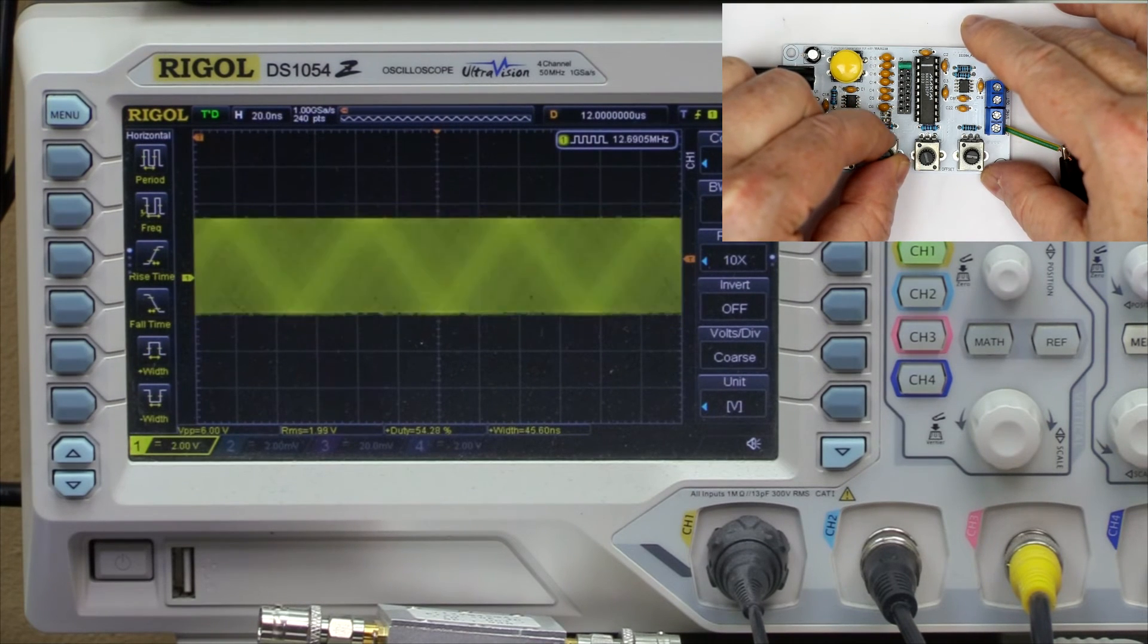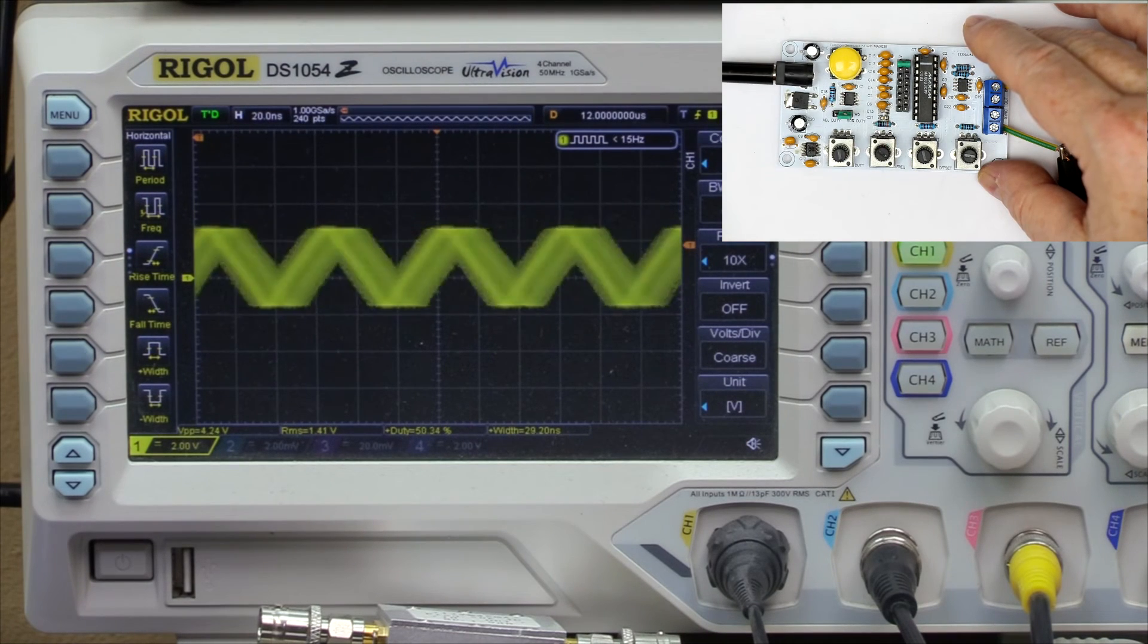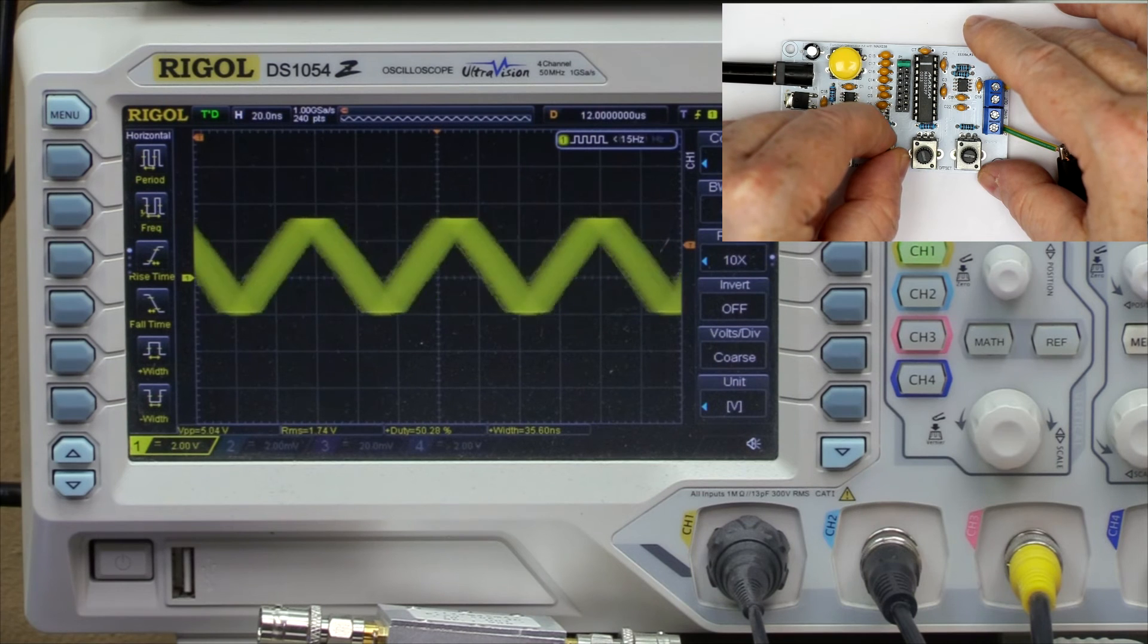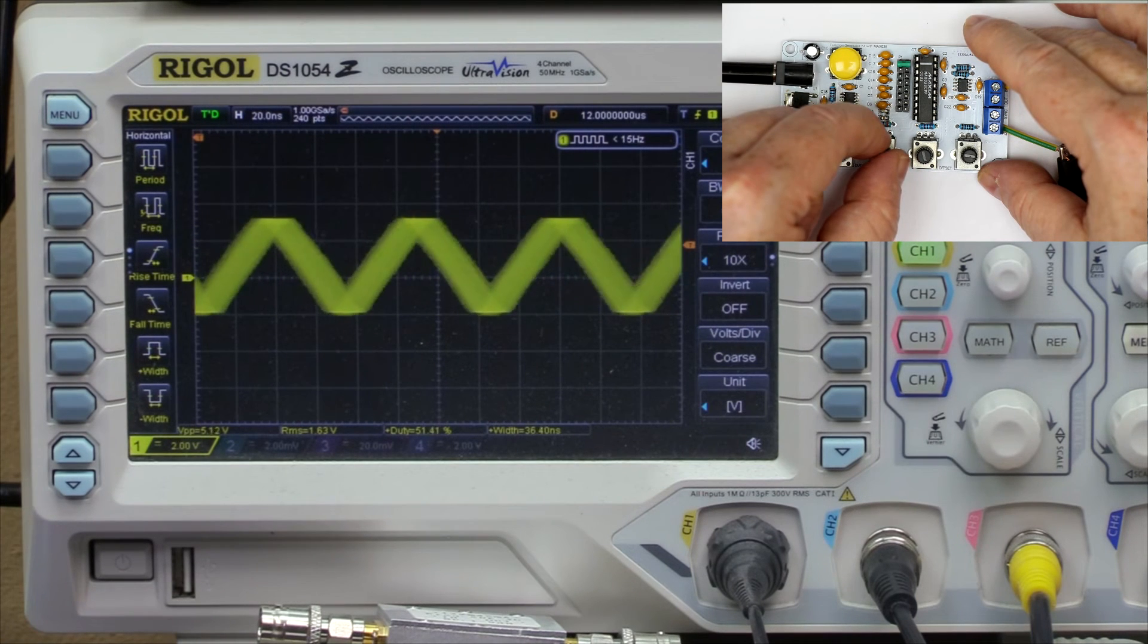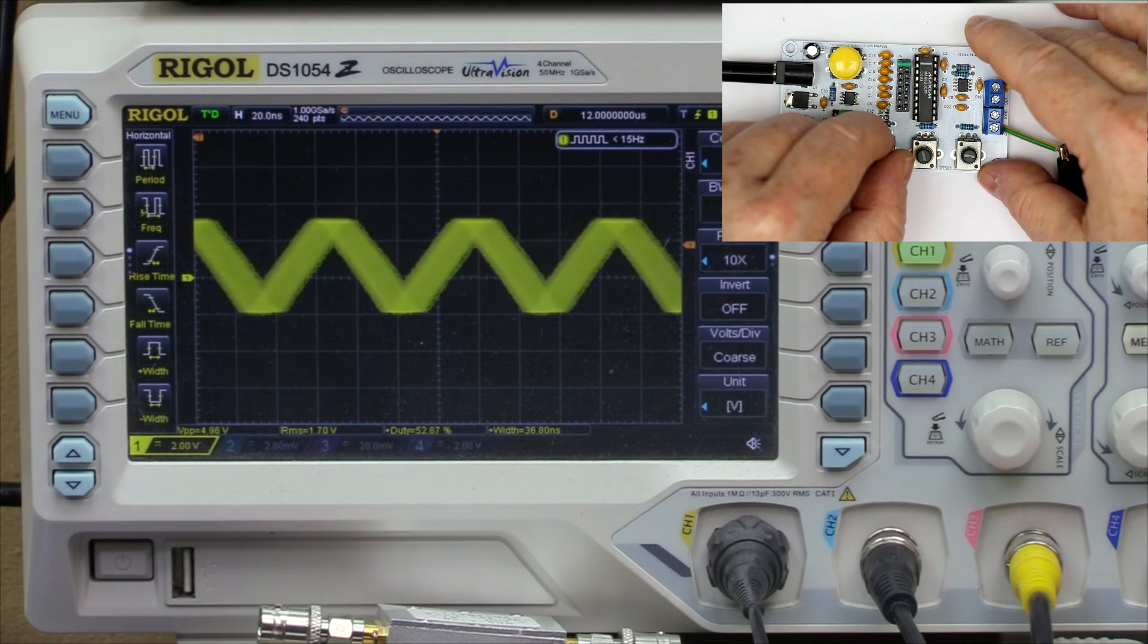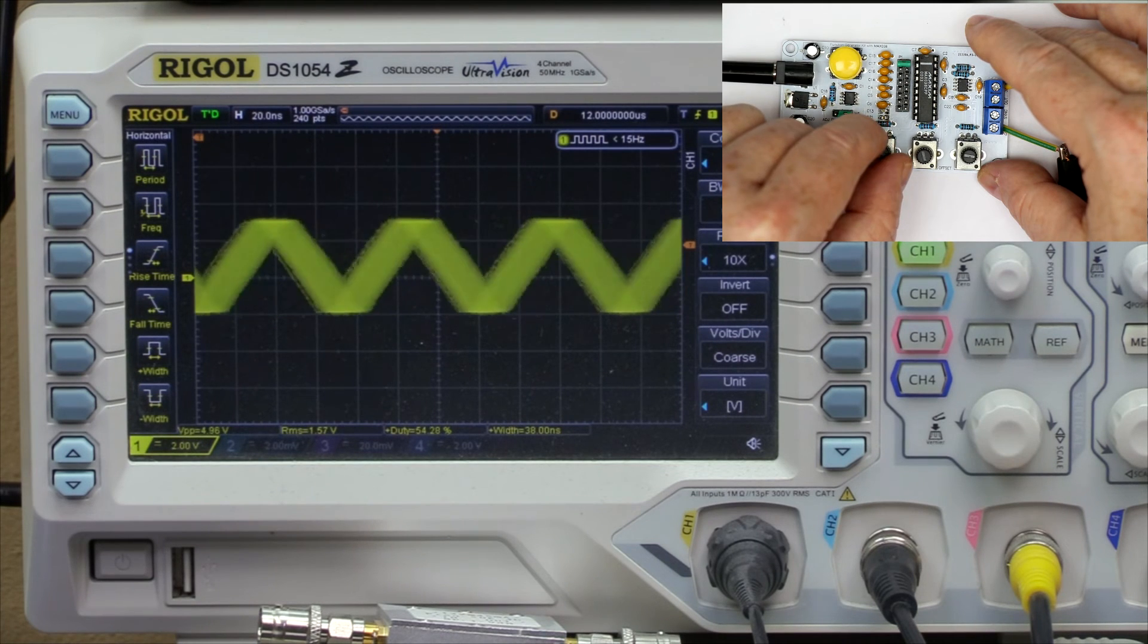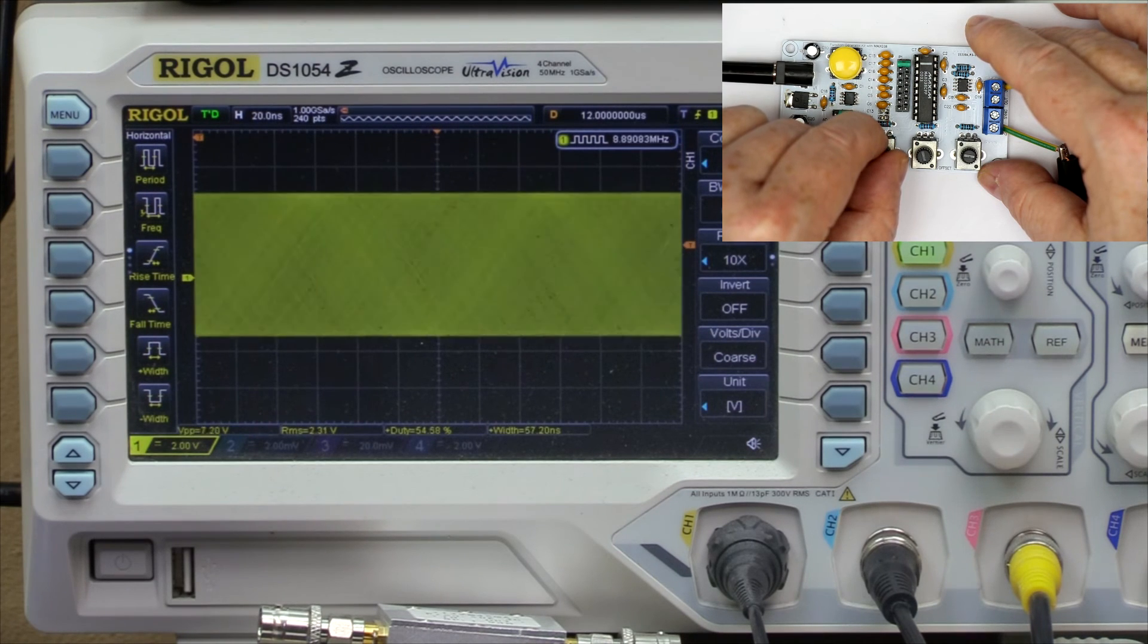And if we still go up to the maximum, the internal frequency counter doesn't work anymore because the signal is simply too bad, but this is the end of the range. We are at 20 nanoseconds per division, and a 20 MHz signal has 50 nanoseconds of period time. That would mean two and a half divisions, and that's not quite where we are now. So we can really get 20 MHz, but this signal is no longer useful for anything.